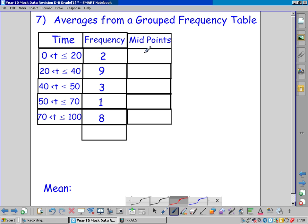Halfway between 0 and 20 is 10. You can add them up and divide by 2 if you're not sure. Halfway between 20 and 40 is 30. 40 and 50 is 45. 50 and 70 is 60. 70 and 100 is 85. So these are our estimates for the times.